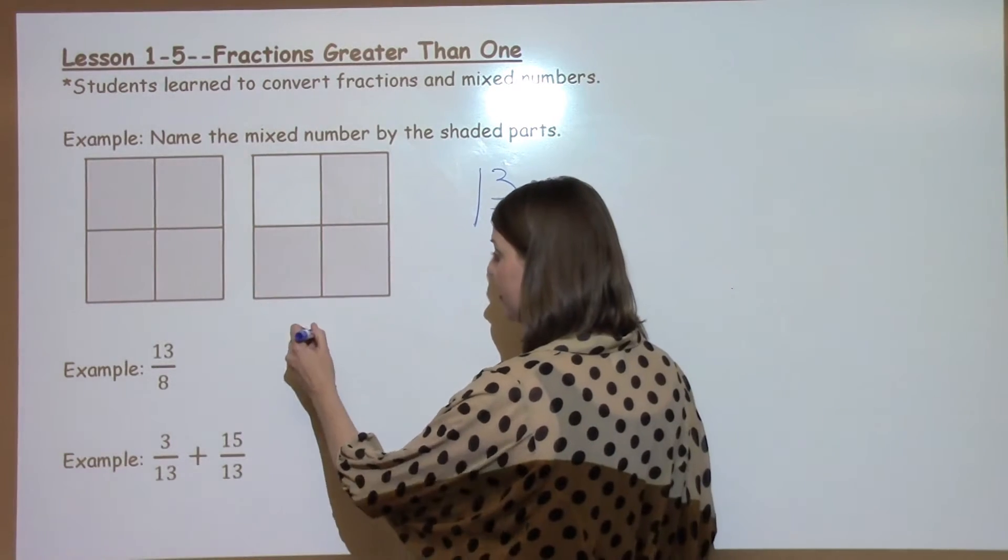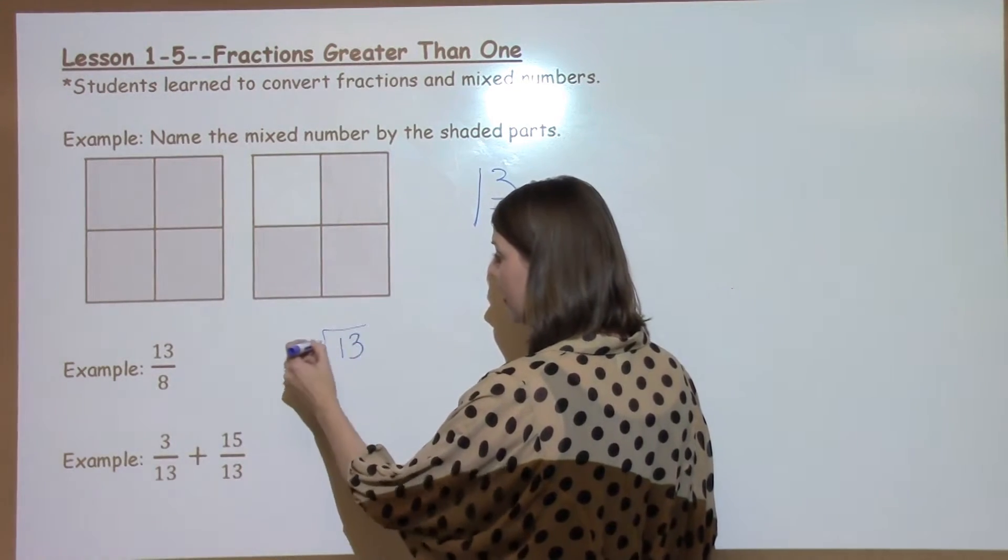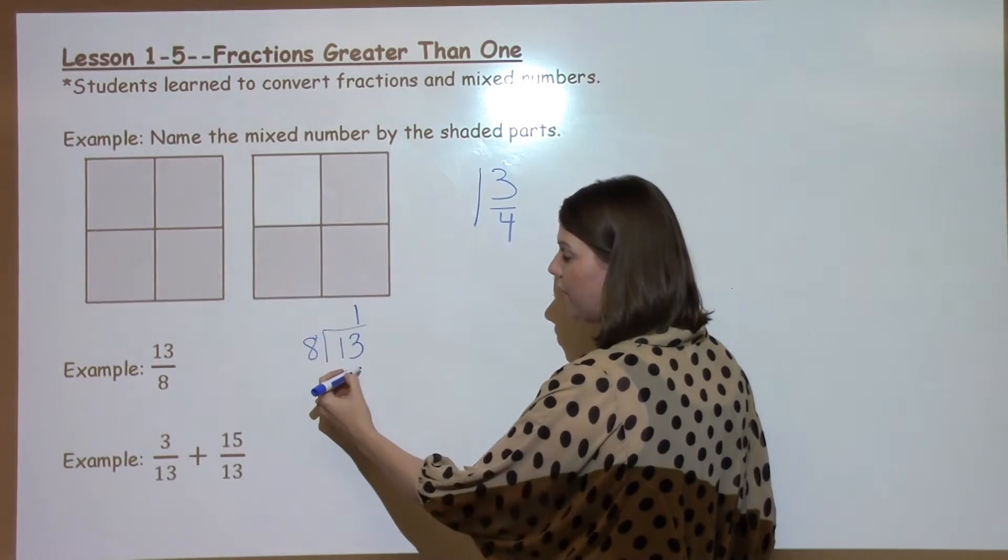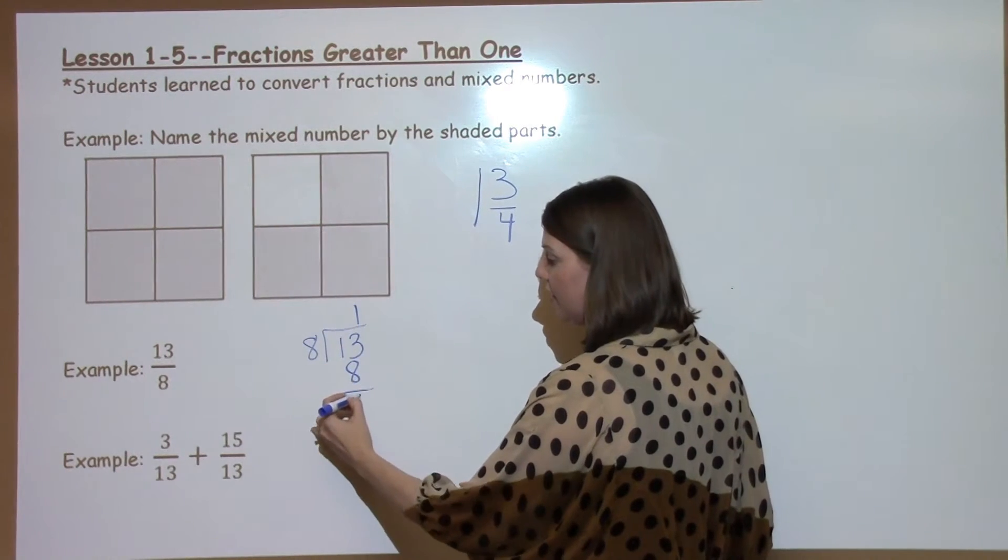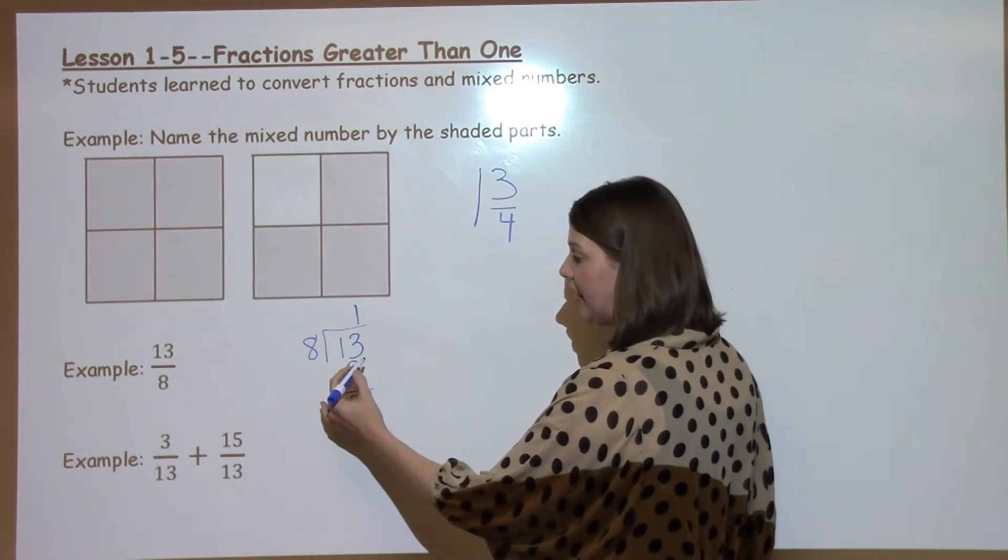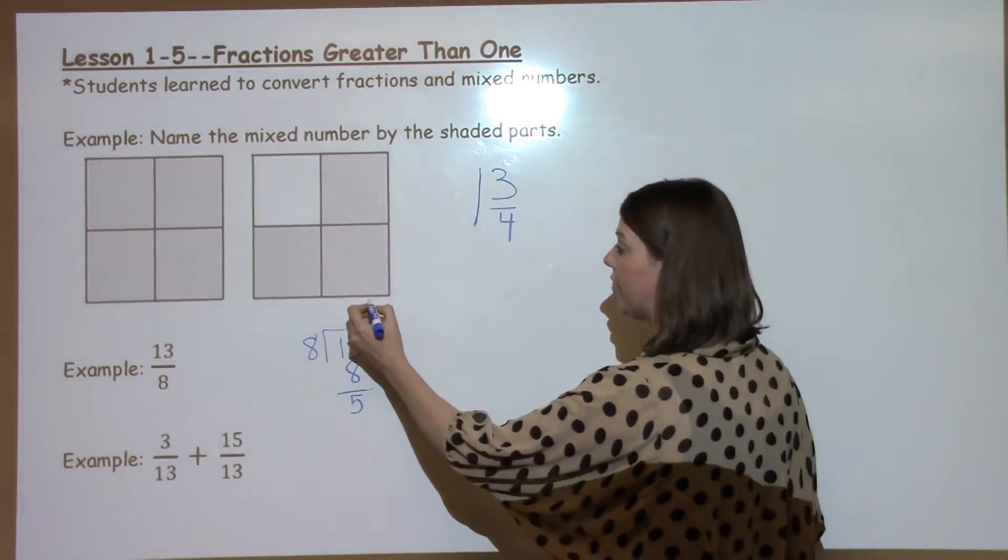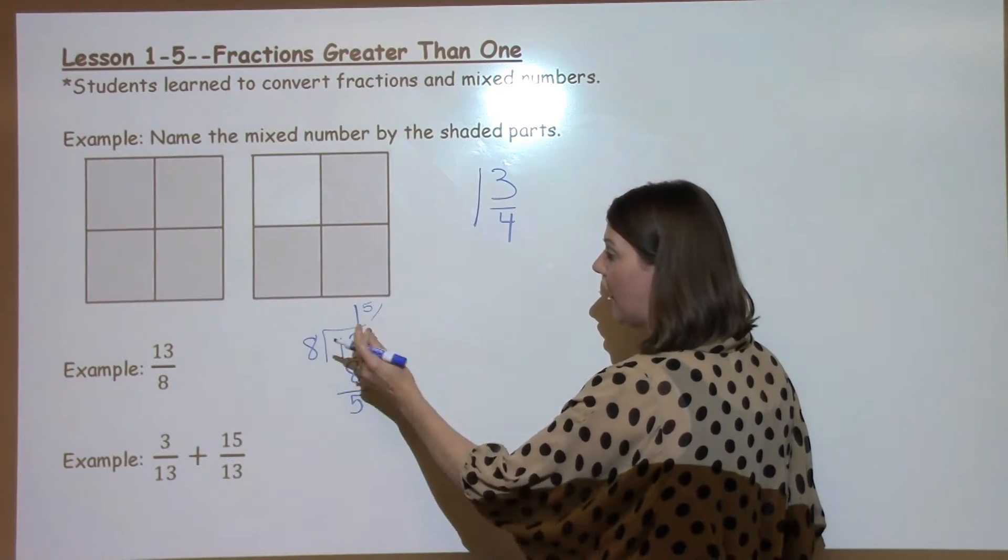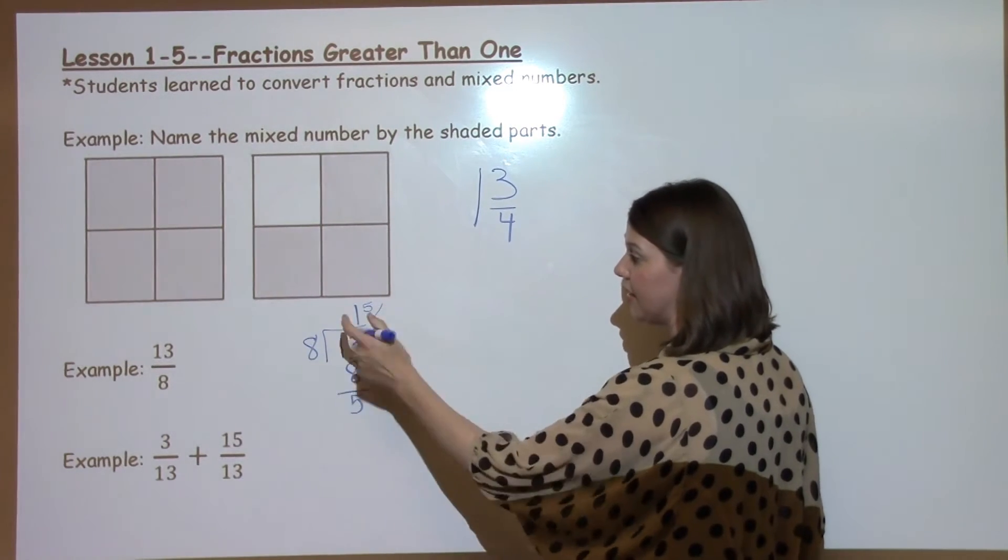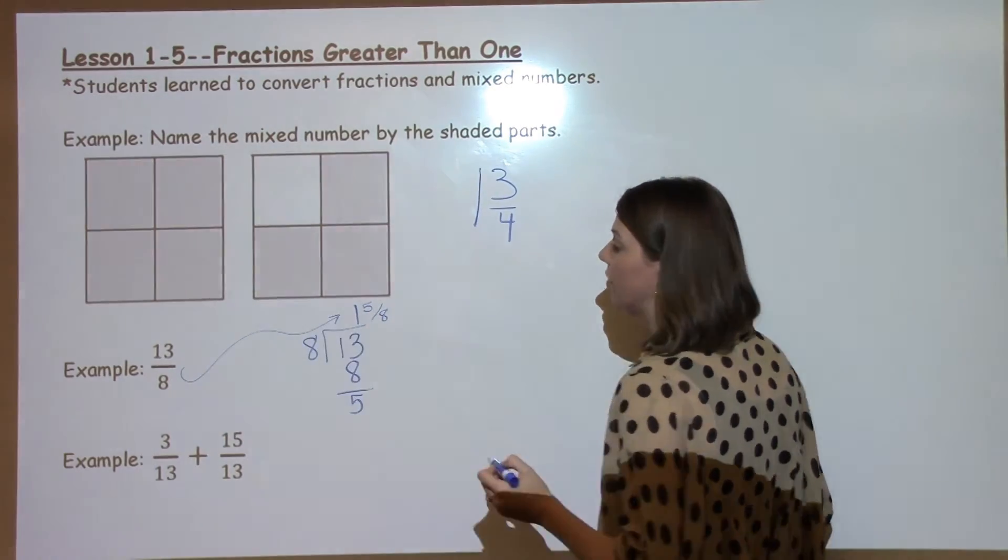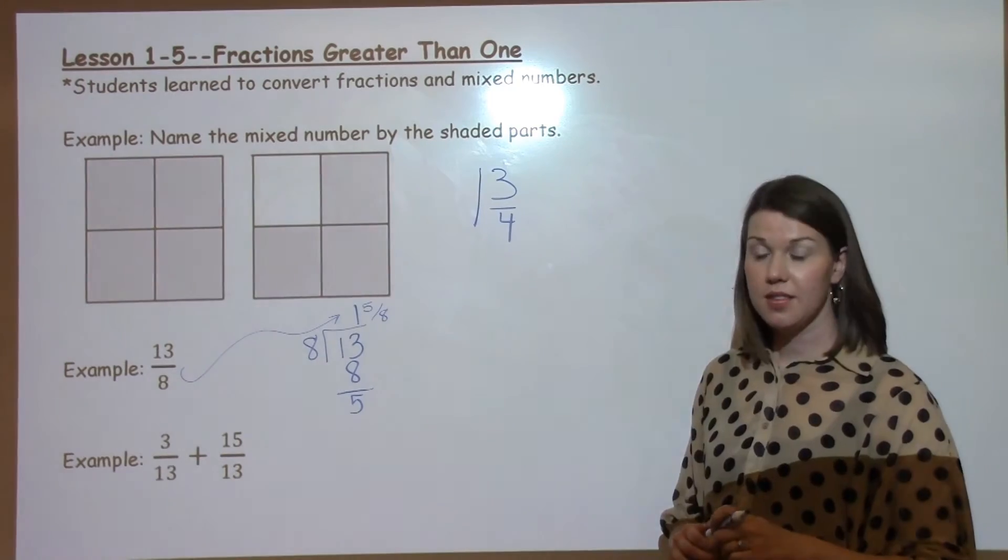The first thing we're going to do is take 13 divided by 8. 8 can go into 13 one time. 1 times 8 is 8 with 5 left over. There's nothing left to bring down, so I know this is going to be my remainder. My remainder goes into the numerator of my fraction. I get my denominator from my divisor. So 13 eighths is the same as a mixed number, which is 1 and 5 eighths.